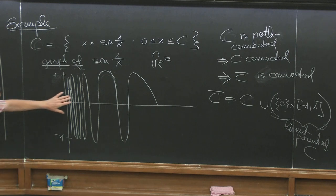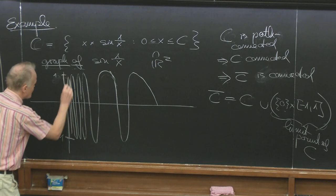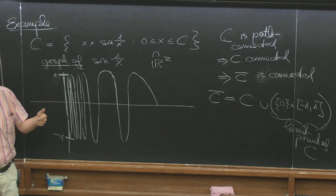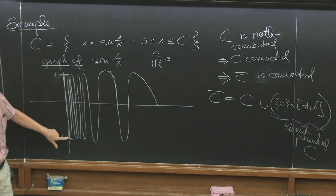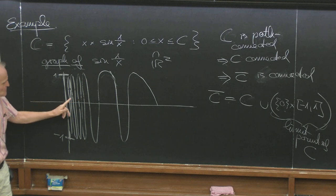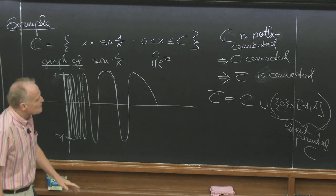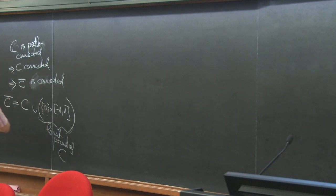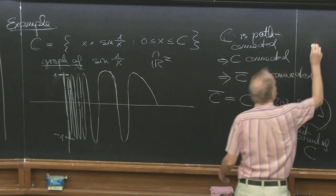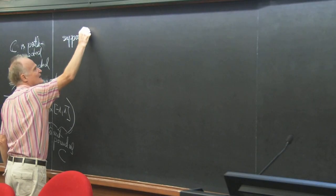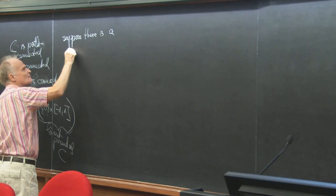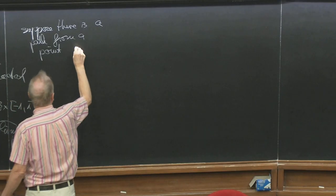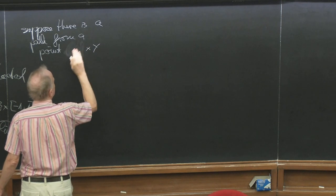So C-bar is connected. But it doesn't look path connected. We suppose that we have two path components: C and this interval. They are path connected, but there shouldn't be a path from here to here. Suppose there is a path from a point 0 × y in 0 × [−1,1] to a point p in C.